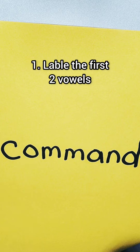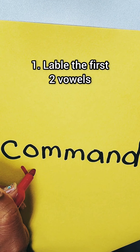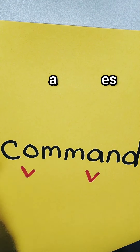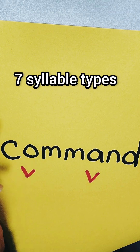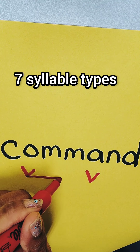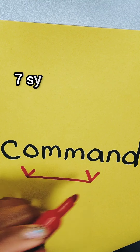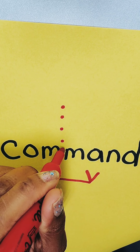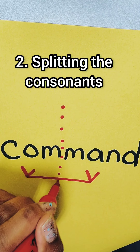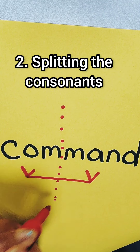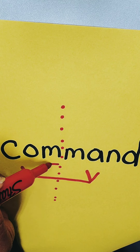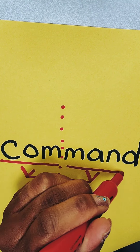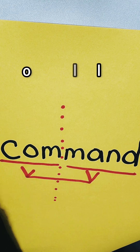First, I would ask the child to label the vowels. There are seven different syllable types, so we're going to label the first two vowels and make a bridge connecting them. Then we draw a dotted line in between our two consonants, because we have one syllable on this side and another syllable on that side. Both of these are closed syllables.